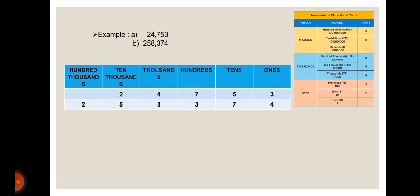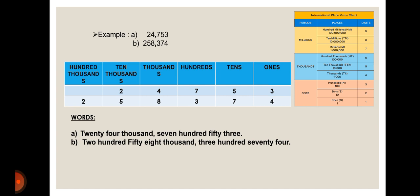Using the same example in tabular form, we insert each digit into its particular place, starting from right to left. So three comes in ones, five in tens, seven in hundreds, and four in thousands. For the number 258,374: four is in ones, seven in tens, three in hundreds, eight in thousands, five in ten thousands, and two in hundred thousands.